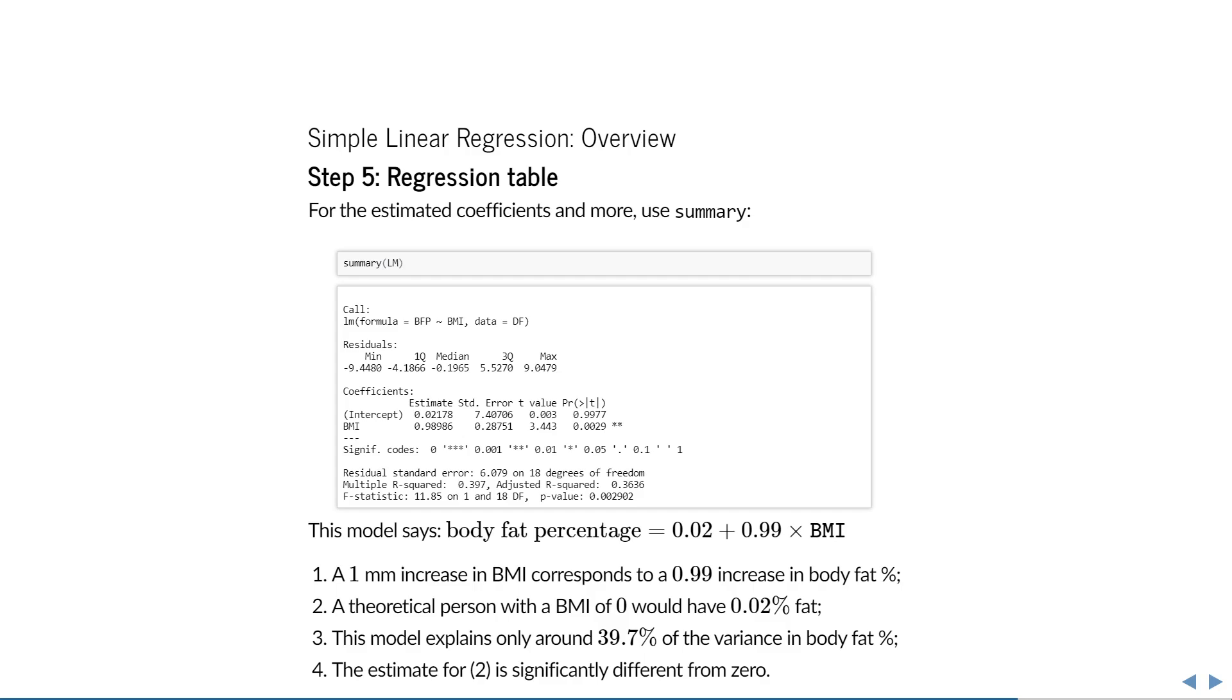Lastly we see something that you've probably heard of before, an omnibus test. Again, this test is useful for multiple linear regression, where you have more than one effect. But here, answering the question if there is any effect is the same as asking whether there's an effect of BMI, and therefore you'll see that in simple linear regression this p-value is always identical to that of the slope.